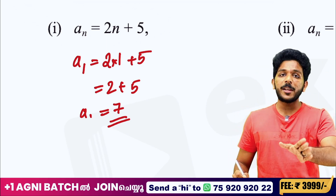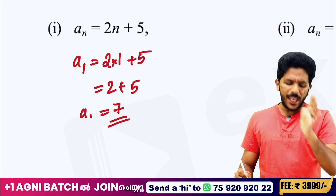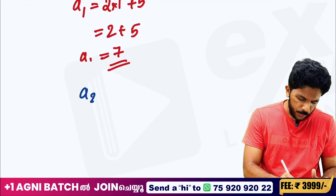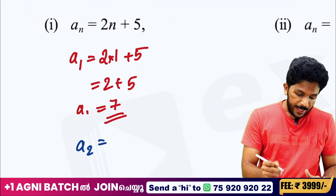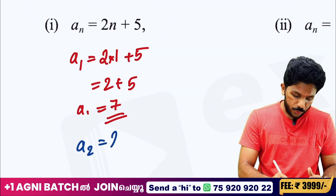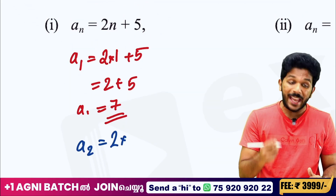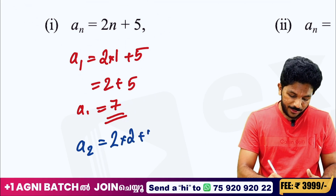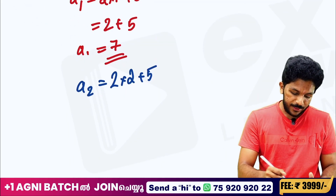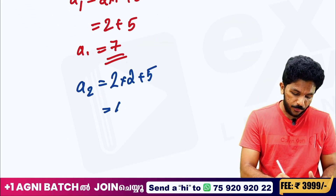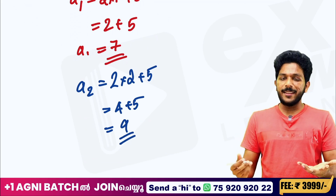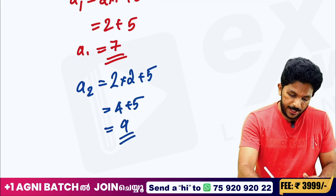So what is the first term? This is a2. This is 2 into n, so a2 = 2 into 2 plus 5. The sum of 2 into 2 is 4, plus 5. This is also the second term.